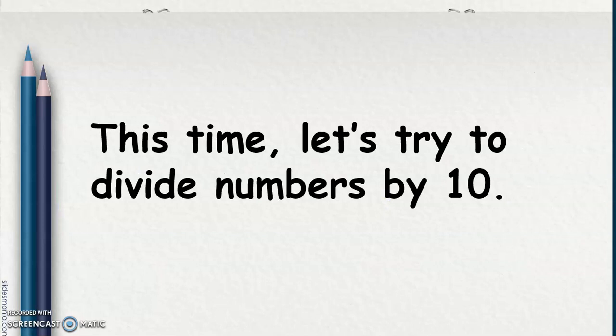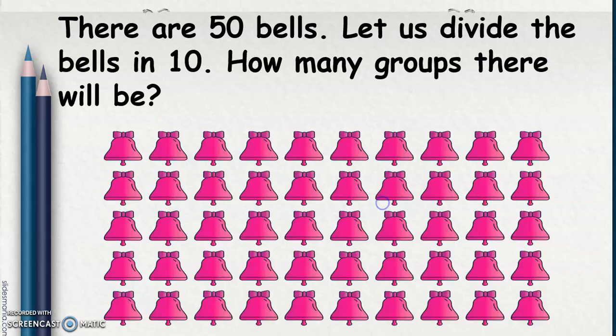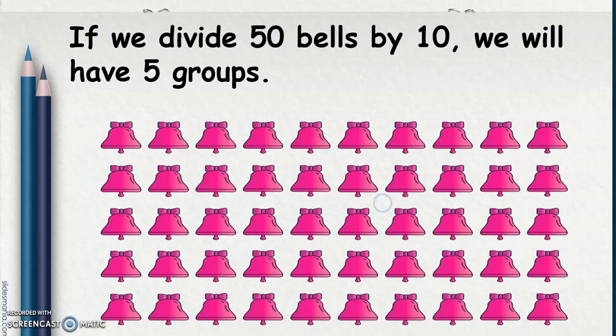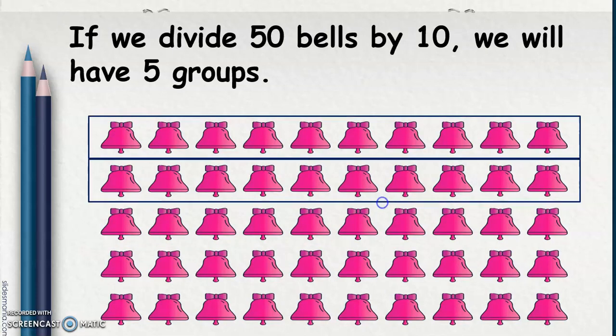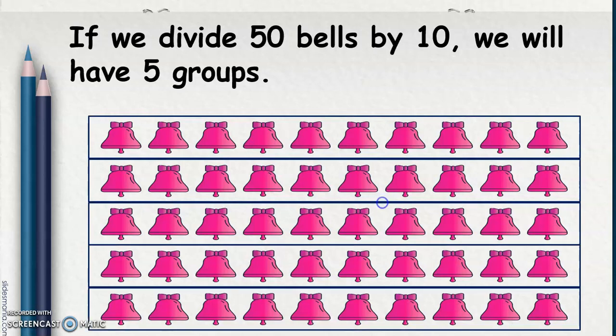This time, let's try to divide numbers by 10. There are 50 bells. Let us divide the bells by 10. How many groups will there be? If we divide 50 bells by 10, we will have 1, 2, 3, 4, 5 — 5 groups.